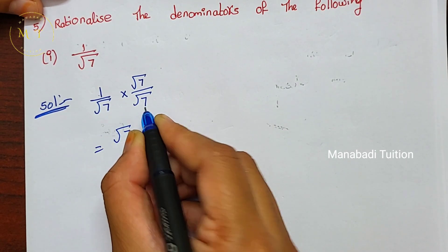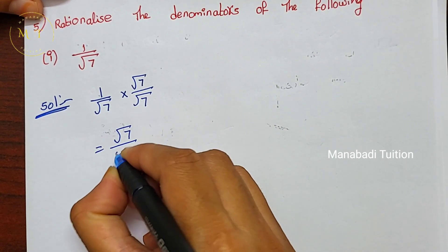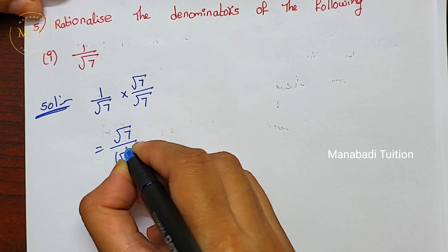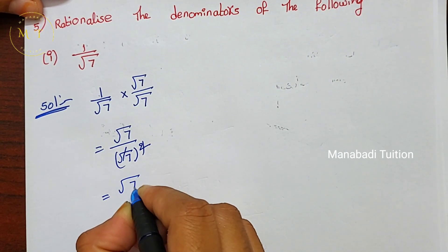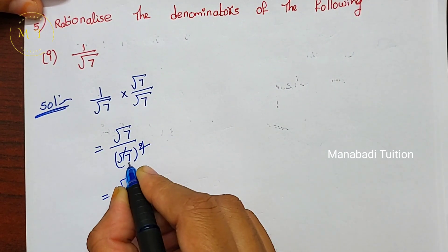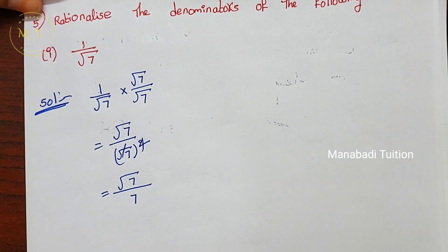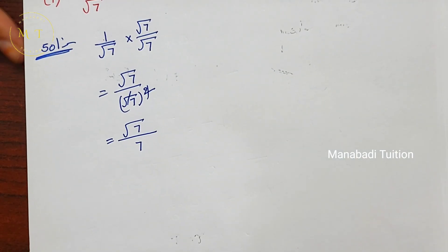Question 5 — rationalizing denominators. First part: root 7 means root 7 whole squared. Square and root cancel, so root 7 by denominator gives only 7.